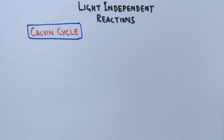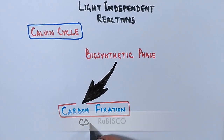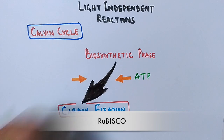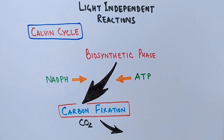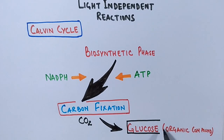The light-independent reactions do not need light energy to occur. Instead, they use the energy produced from the light reactions — ATP and NADPH. This phase is the biosynthetic phase, which involves carbon fixation by the Rubisco enzyme. Through carbon fixation, plants drive the synthesis of glucose molecules. This is how phototrophs harness light energy to synthesize organic compounds.